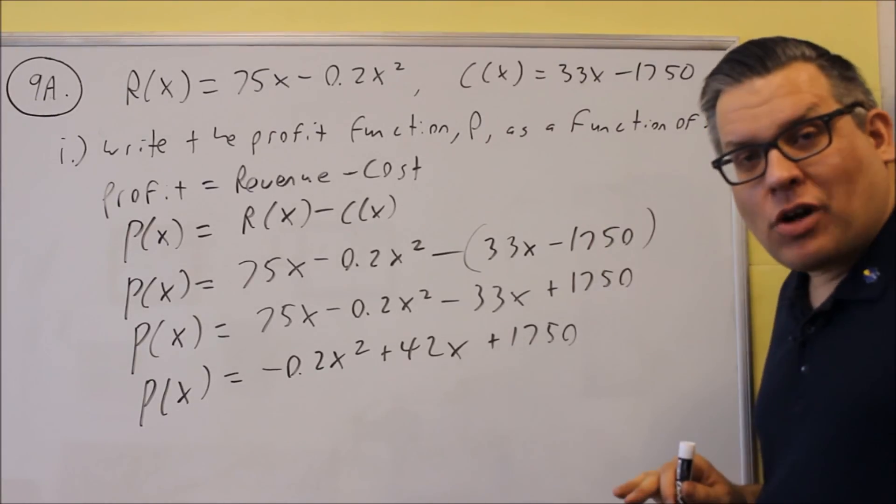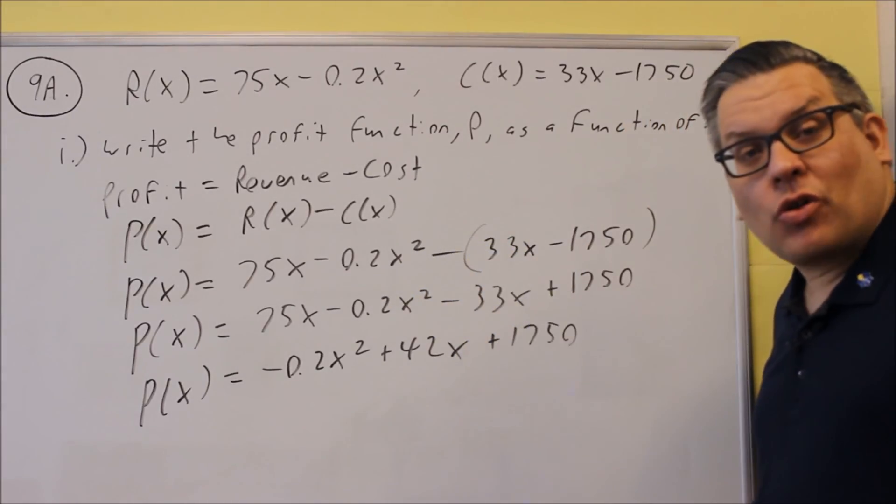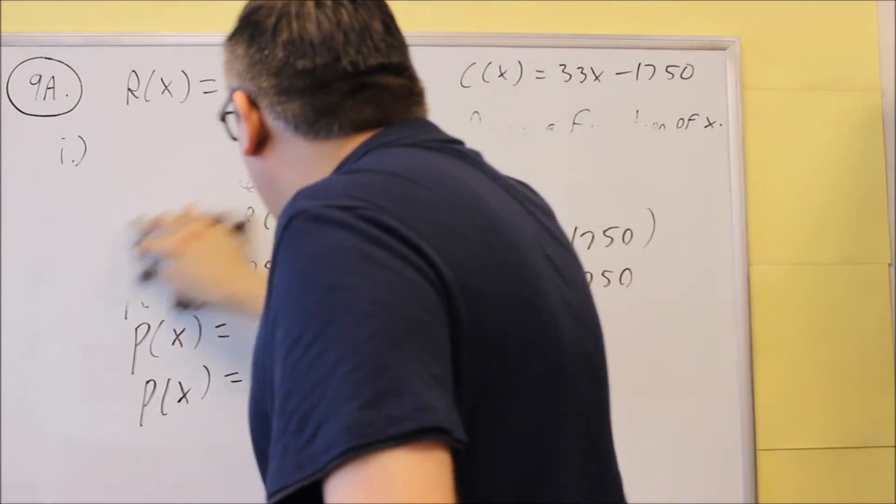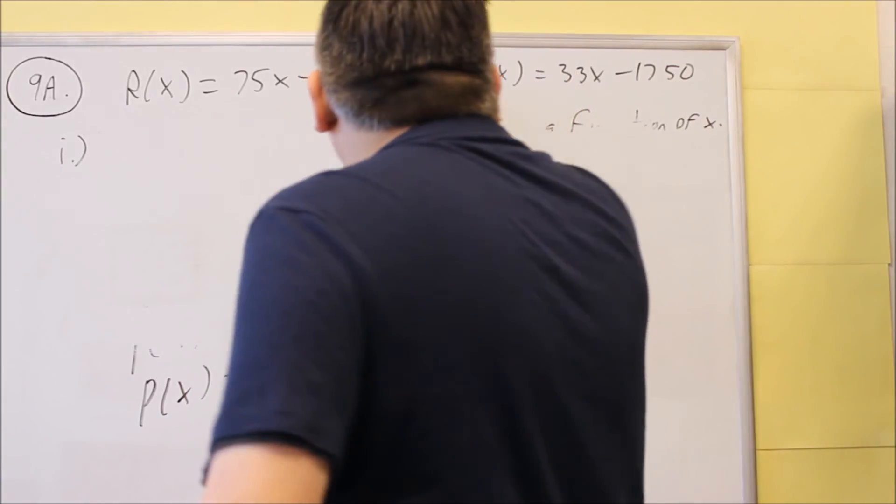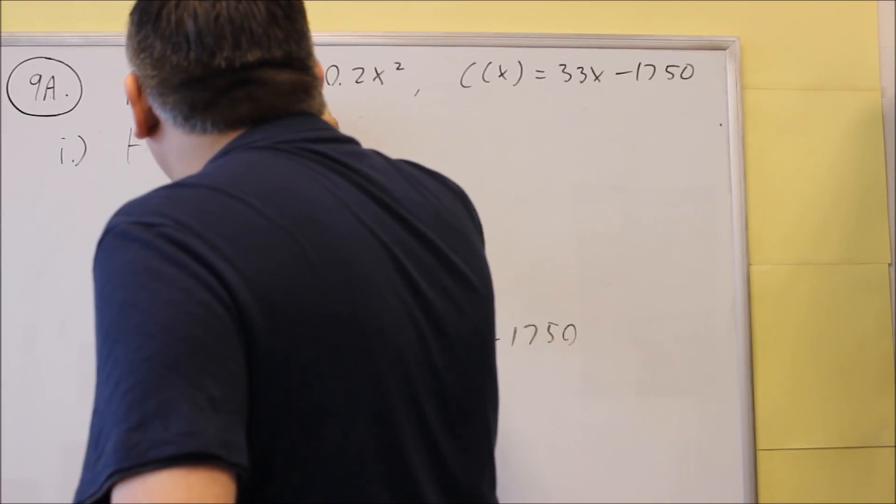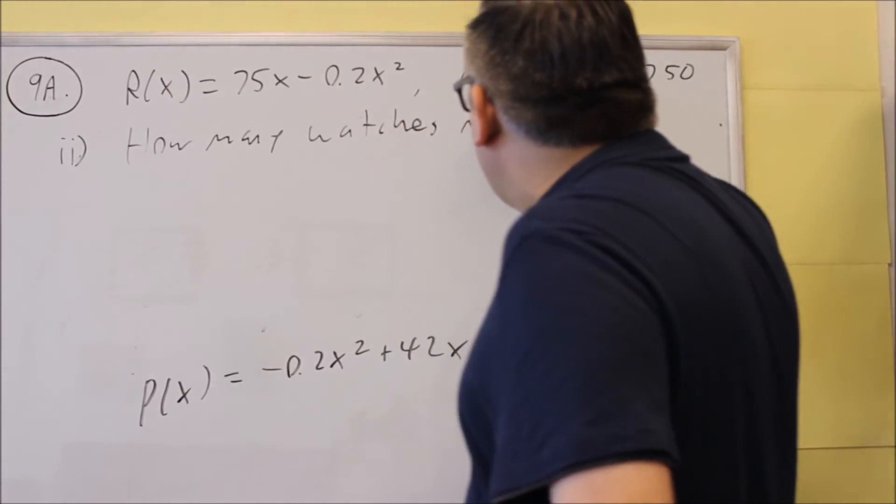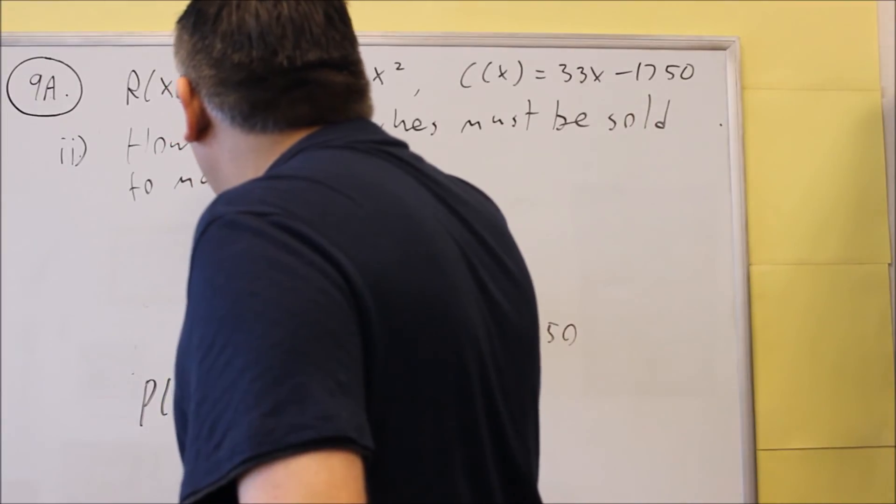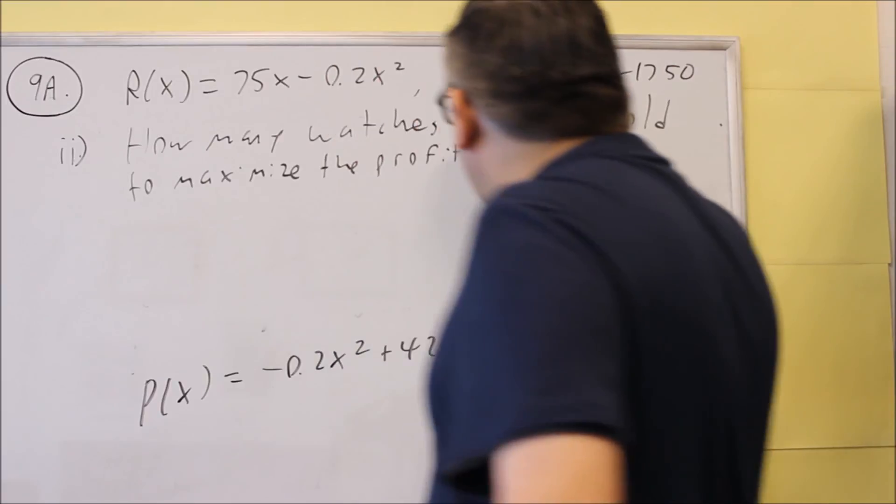Now let's take a look at the second one. It says, how many watches must be sold in order to maximize the profit? We're going to keep that formula because we're going to come back to it. So for part ii, how many watches must be sold to maximize the profit?